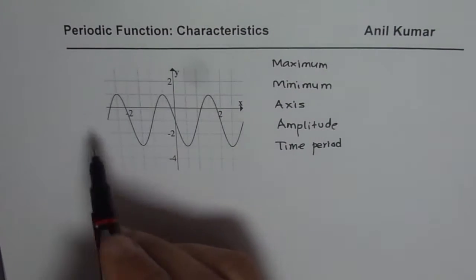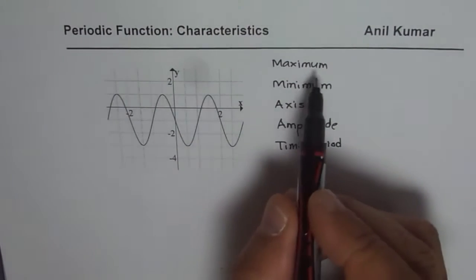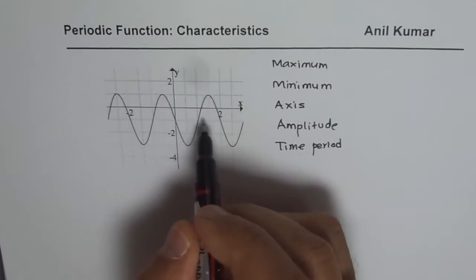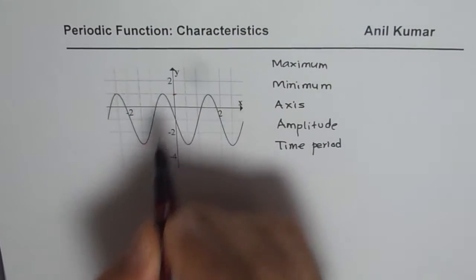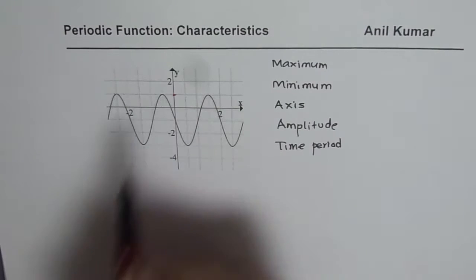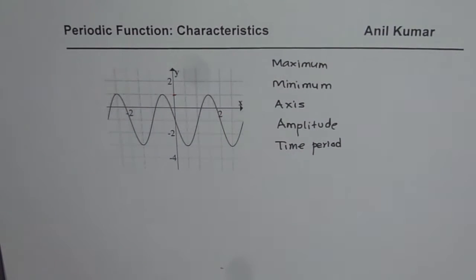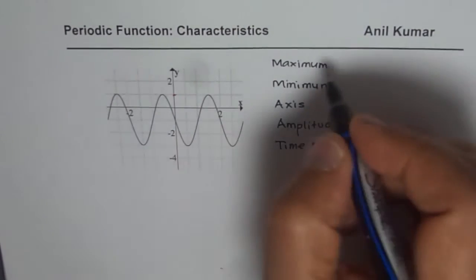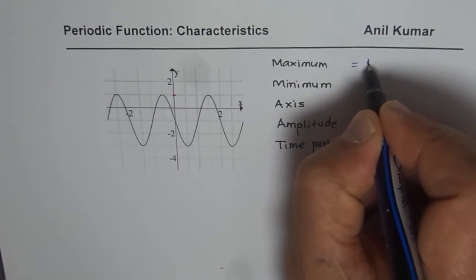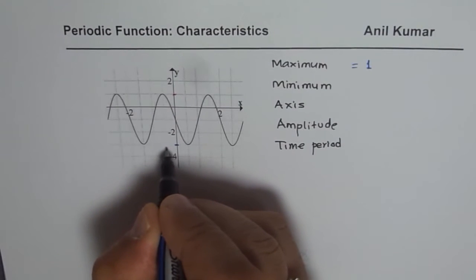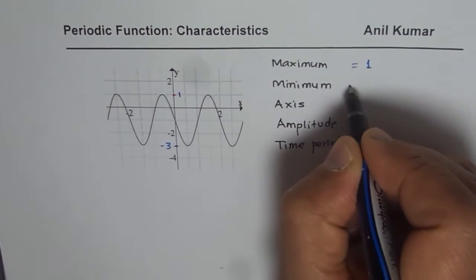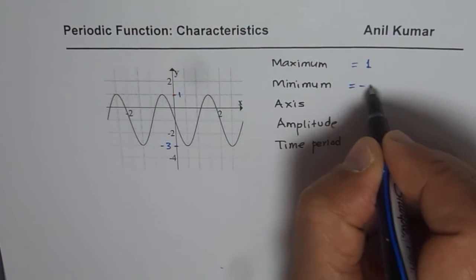You can read these values from the graph itself. The maximum value is the maximum value attained by the function. In this particular example, the maximum value is equal to plus one. The minimum value here is minus three, so the minimum in this case is minus three.